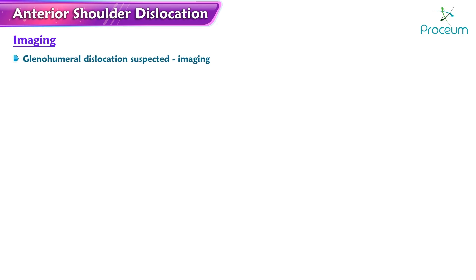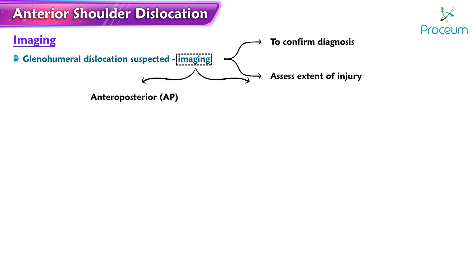In cases where a glenohumeral dislocation is suspected, imaging is necessary to confirm the diagnosis and assess the extent of the injury. The recommended approach involves obtaining at least two views: an antero-posterior view and a scapular Y view.